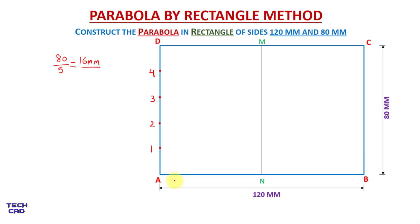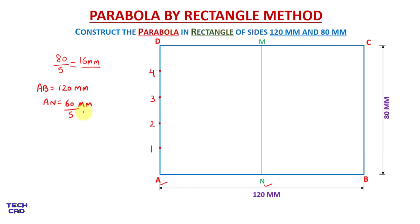In the same way, divide line AN into five equal divisions. Remember: whatever divisions you take in the vertical line, you must take the exactly same number in the horizontal line AN, which is half of the complete length AB. Since AB is 120 mm, AN is 60 mm. To divide AN into five equal parts, each division will be 12 mm.